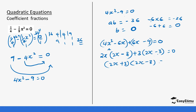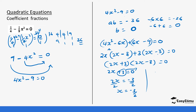From (2x plus 3)(2x minus 3) equals zero: taking the first factor, 2x plus 3 equals zero gives 2x equals negative 3, and dividing by 2, x equals negative 3 over 2. From the second factor, 2x minus 3 equals zero gives 2x equals 3, and dividing by 2, x equals 3 over 2. That is your answer.